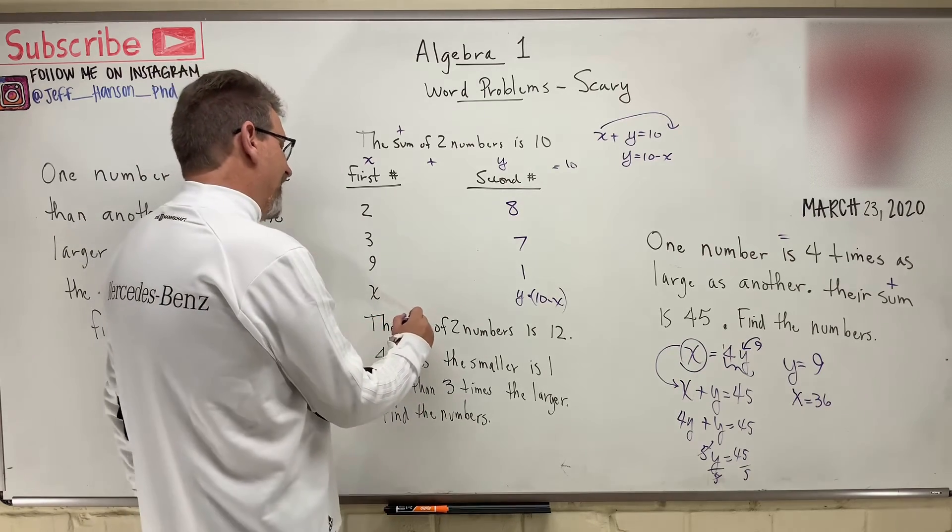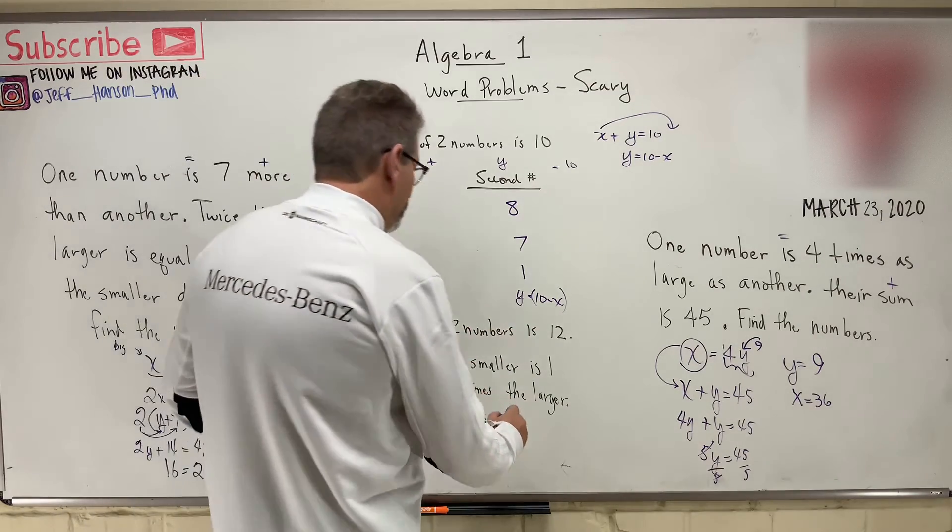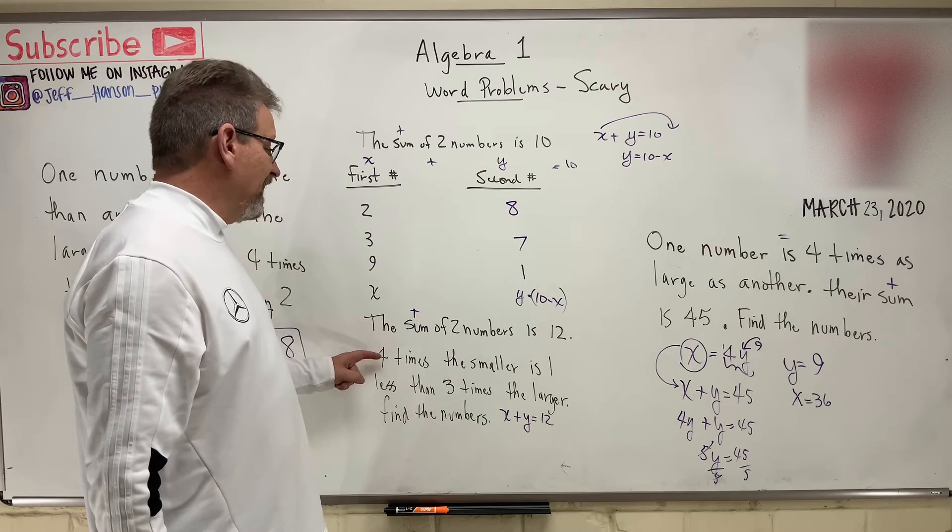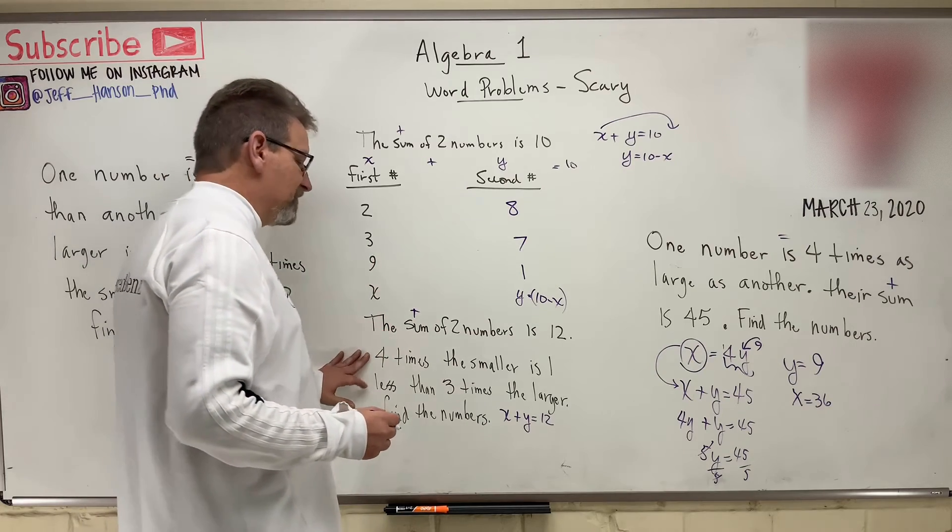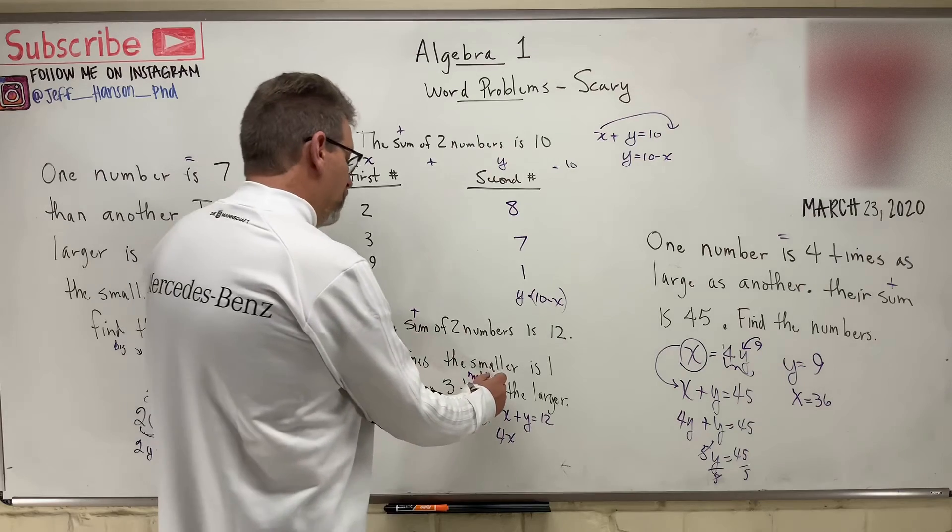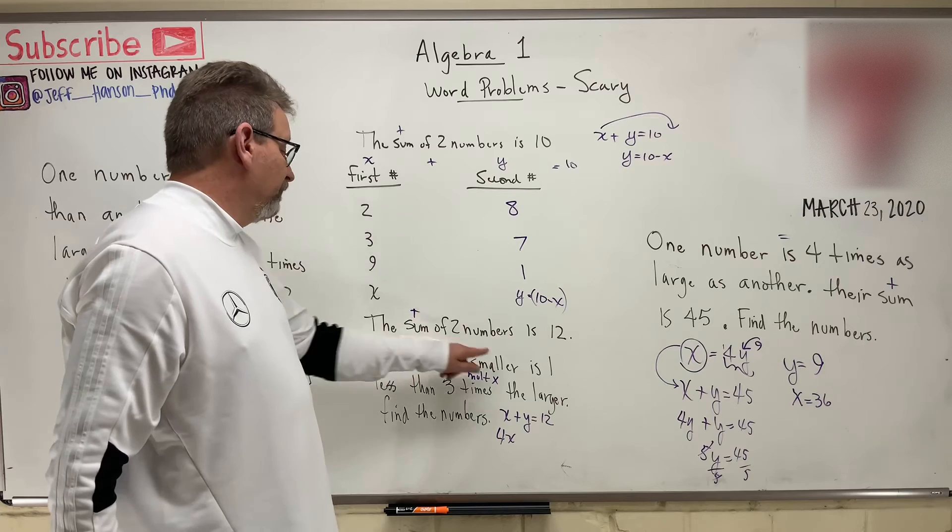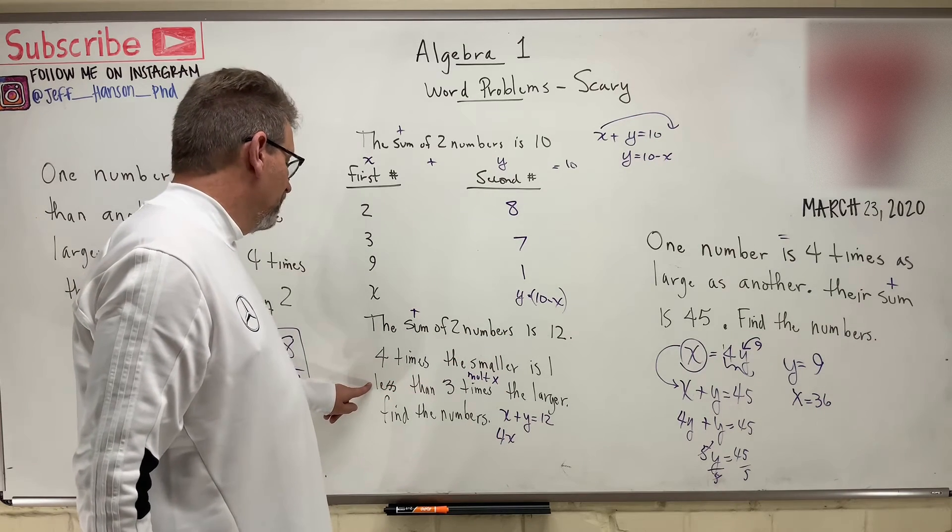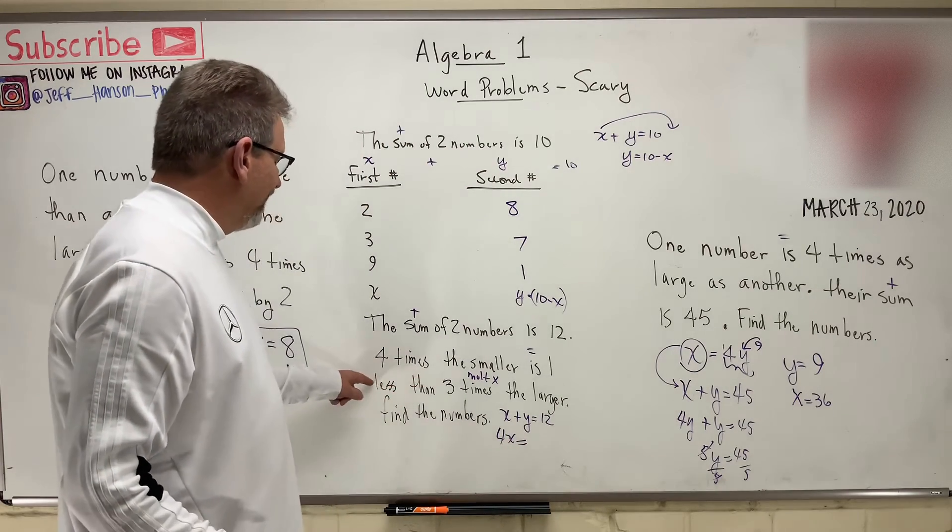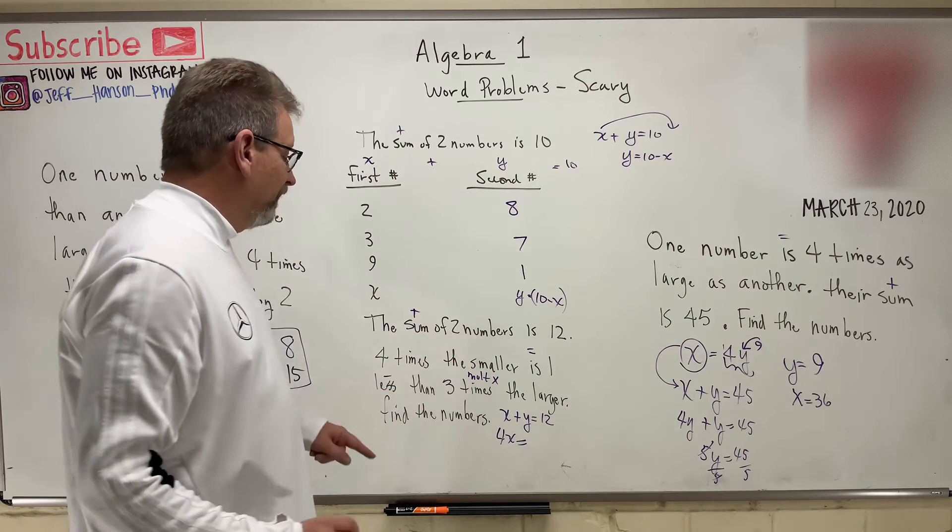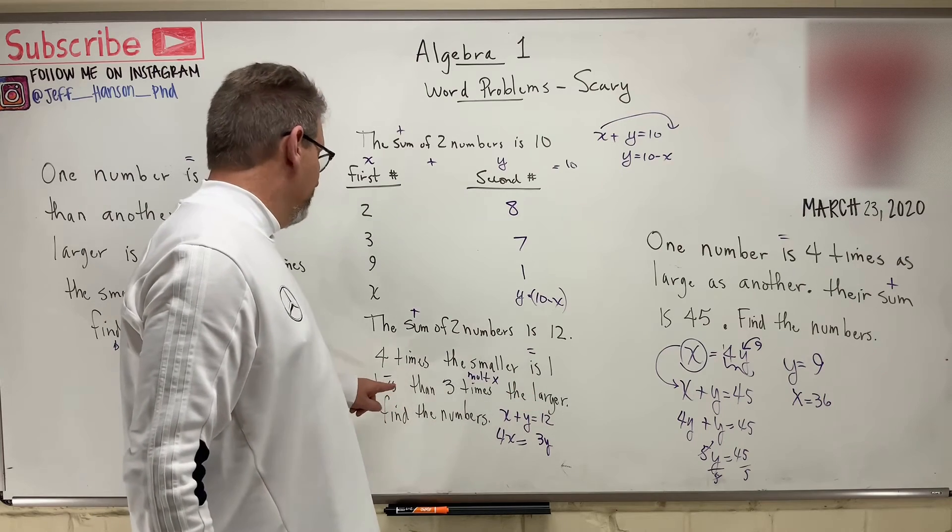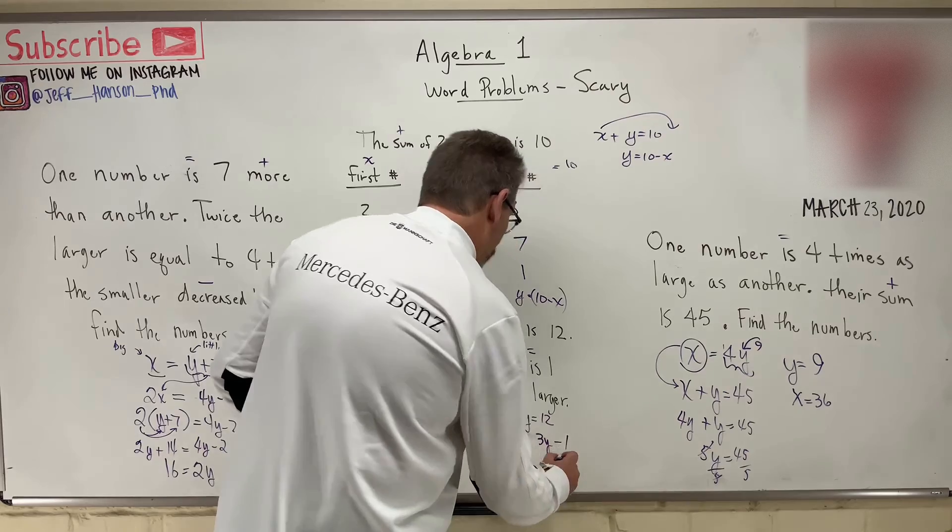One more again. Here we go. The sum, that means adding, of two numbers is 12. So X plus Y is equal to 12. Four times the smaller, and we don't know which one of those is the smaller, so we just pick one. Four times the smaller, and times just means multiply. Four times the smaller is one less. This is tough, isn't it? Four times the smaller is equal to one less, and what does less mean? That means subtract. Then three times the larger number, and we assume if X is the smaller, then Y is the larger. So three times Y, three times the larger, and then minus one. You got to take one away from that. Minus one. Find the numbers.